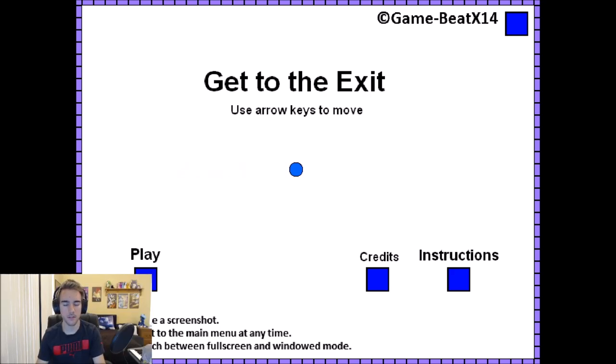Alright, get to the exit. Use arrow keys to move. Press F9 to take a screenshot. Press M to exit to the main menu at any time. Press F to switch between full screen and window mode. They got a pretty basic menu here. I like how there's no mouse in this game. It's basically all just an interactive menu.